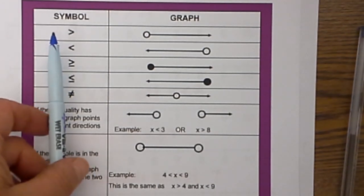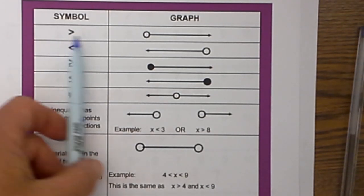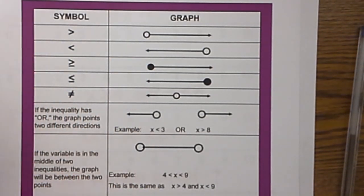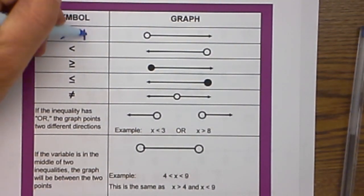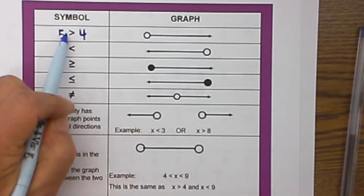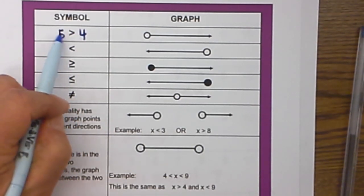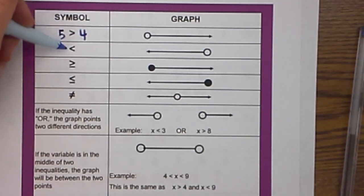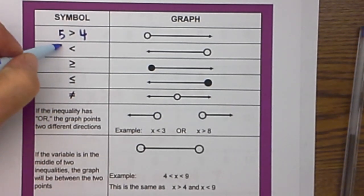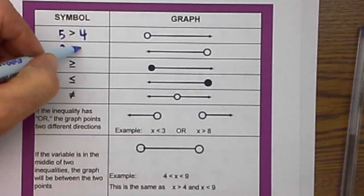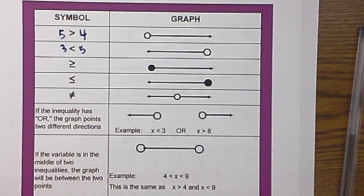This first symbol here is greater than. For instance, you can have 5 is greater than 4. The way I remember is that this end is larger than the other end, so 5 is greater than 4. This next example is less than, and it is 3 is less than 5.